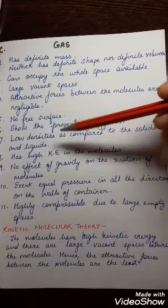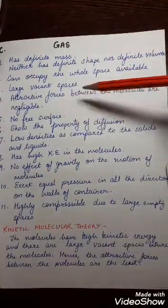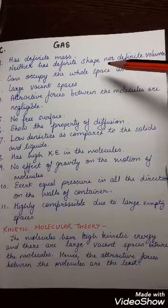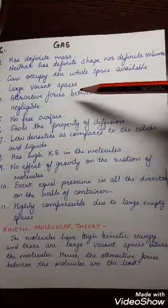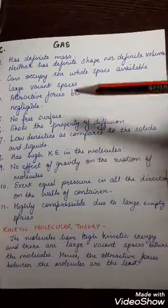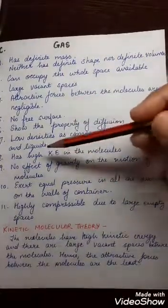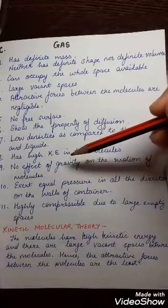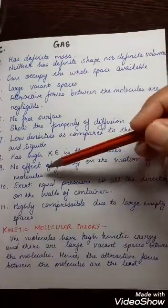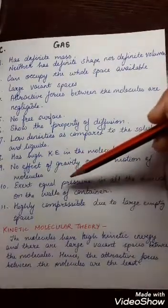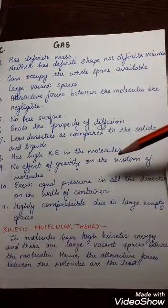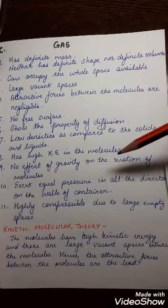Gases have low densities compared to solids and liquids because they have negligible attractive forces and molecules keep moving randomly in all directions with large empty spaces between them. Hence their densities are the least compared to solids and liquids. Gas molecules have very high kinetic energy. There is no effect of gravity on the motion of gas molecules because of their very high kinetic energy — they occupy the whole space available.